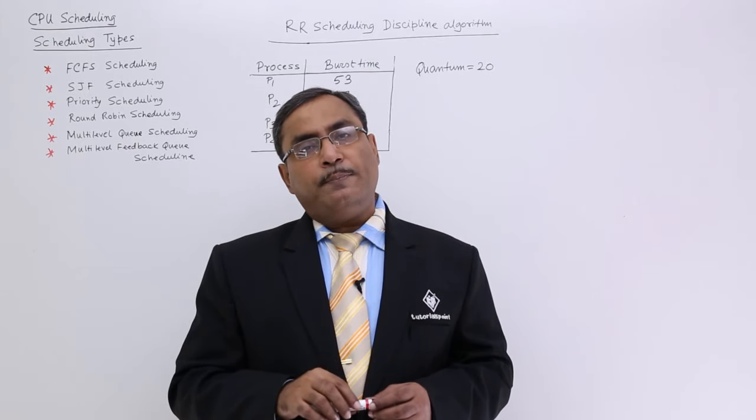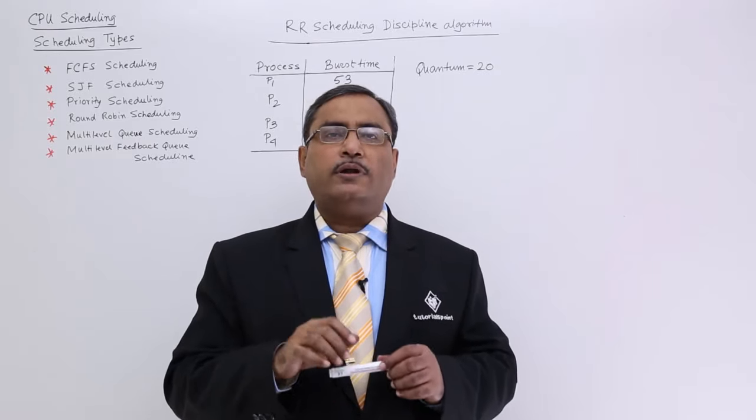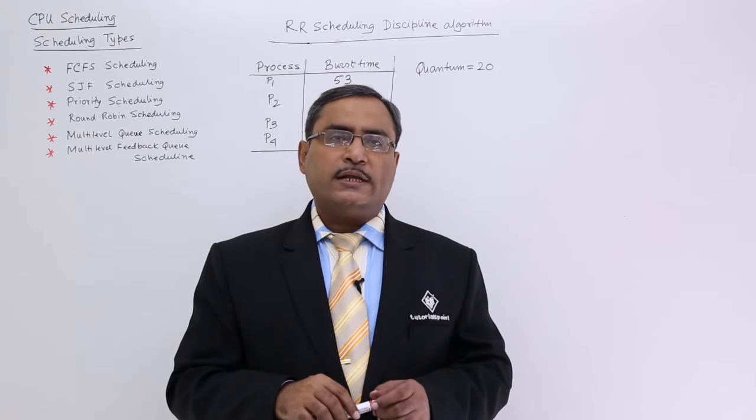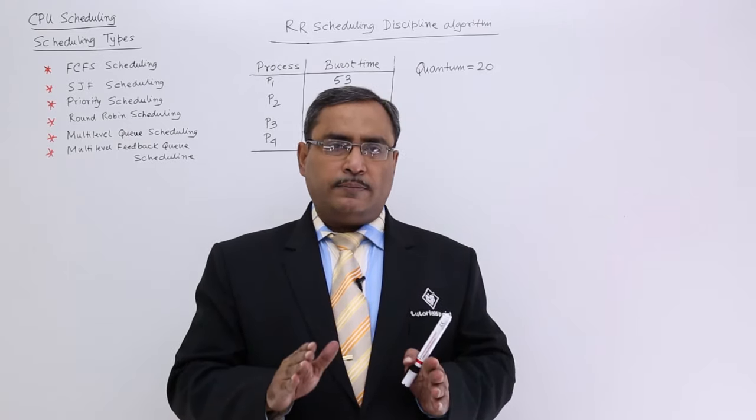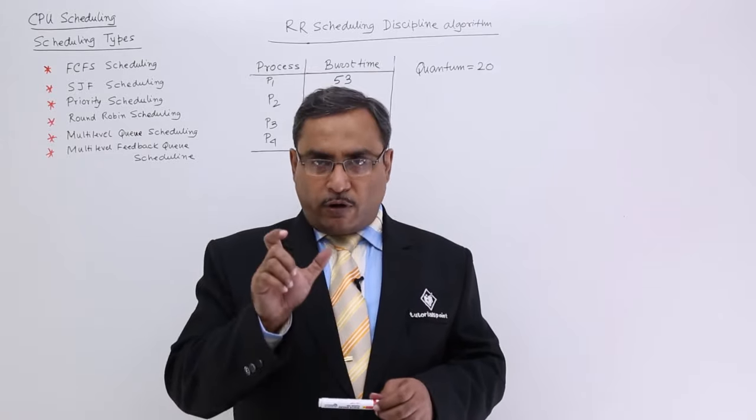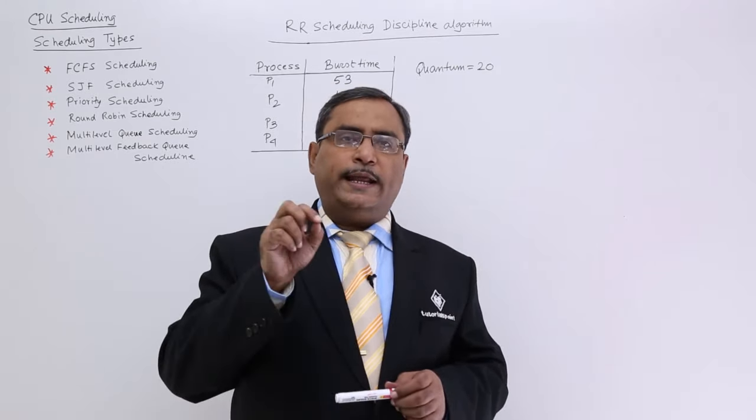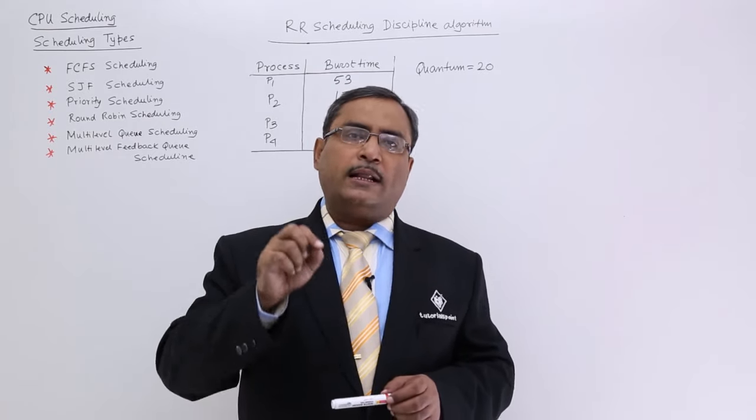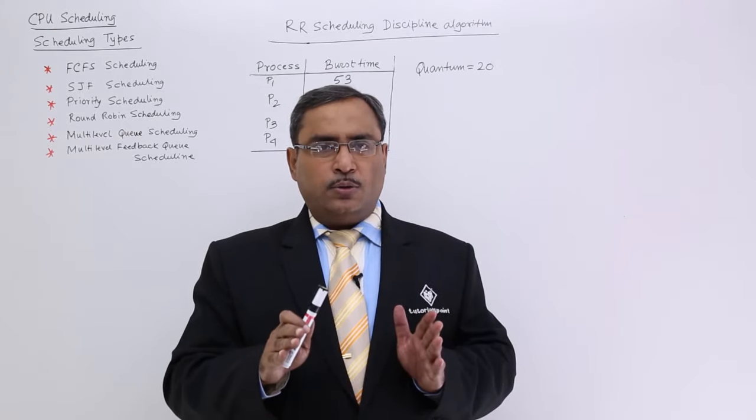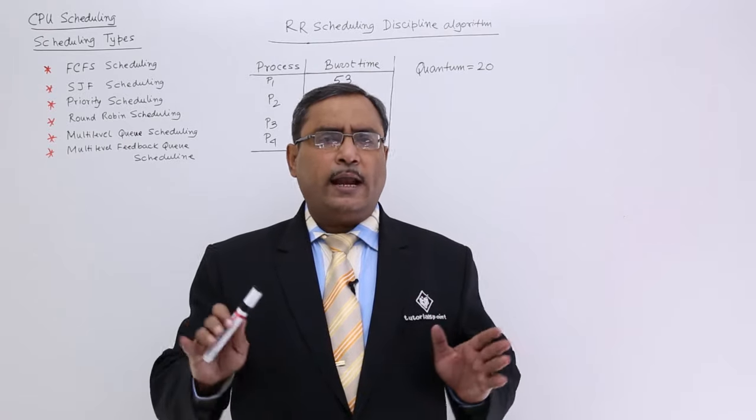But in case of round robin scheduling, what will happen? We shall give a time slice to each and every process for its execution. Time slice means a duration of time also known as quantum. So for each and every quantum, I shall give the CPU to the respective process. And in this way, the process will get executed for that particular time duration. After that, the CPU will be taken from that very process and it will be given to another process depending upon the scheduling criteria. So in this way, we shall have a very fair utilization of this particular scheduling algorithm.